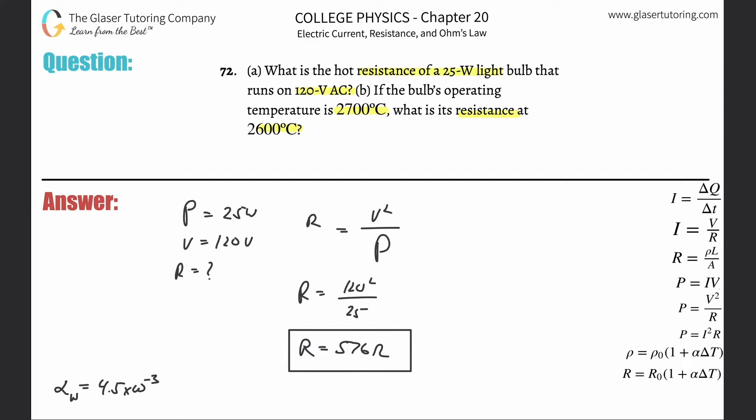So basically, they didn't tell us what the bulb is made out of. So you're left up to your own devices. Usually it's made out of tungsten. So I'm going to use the value of tungsten, the alpha value.